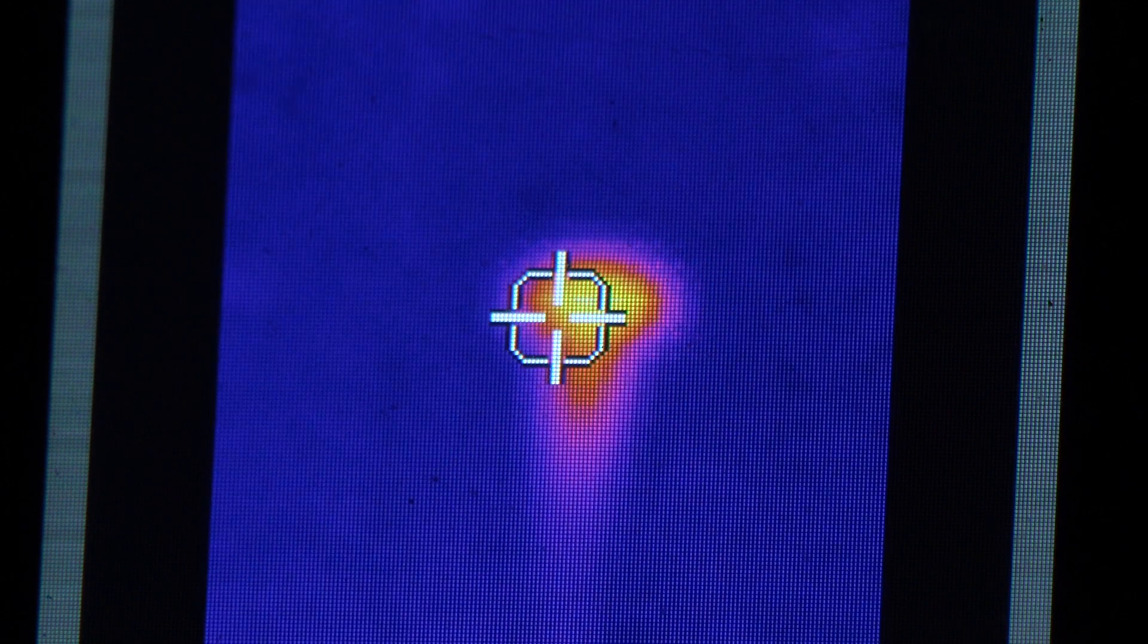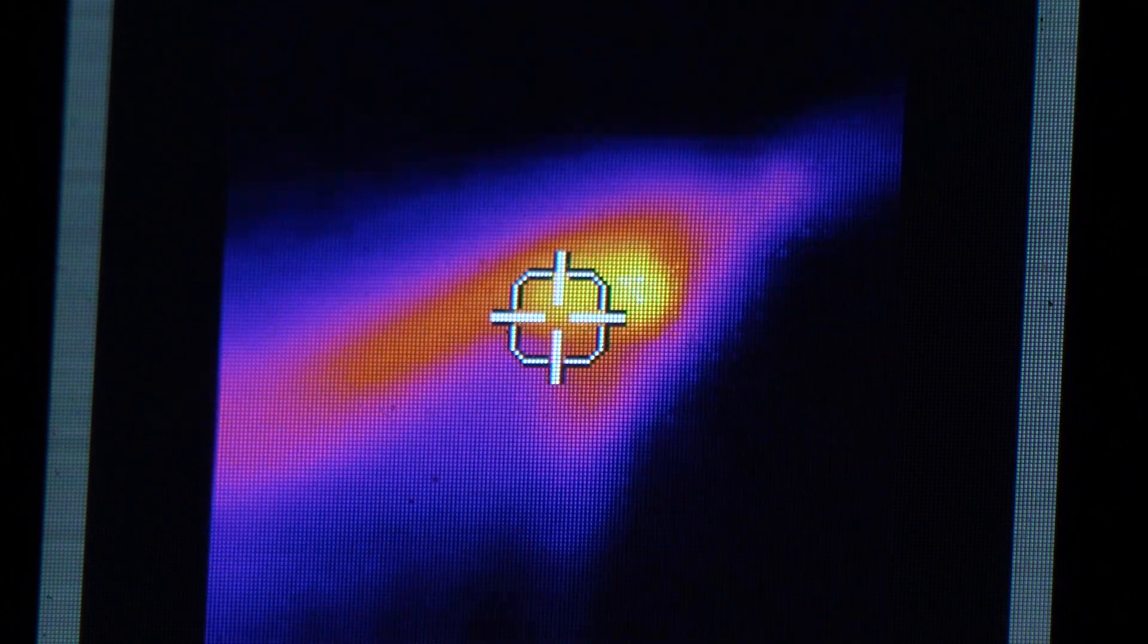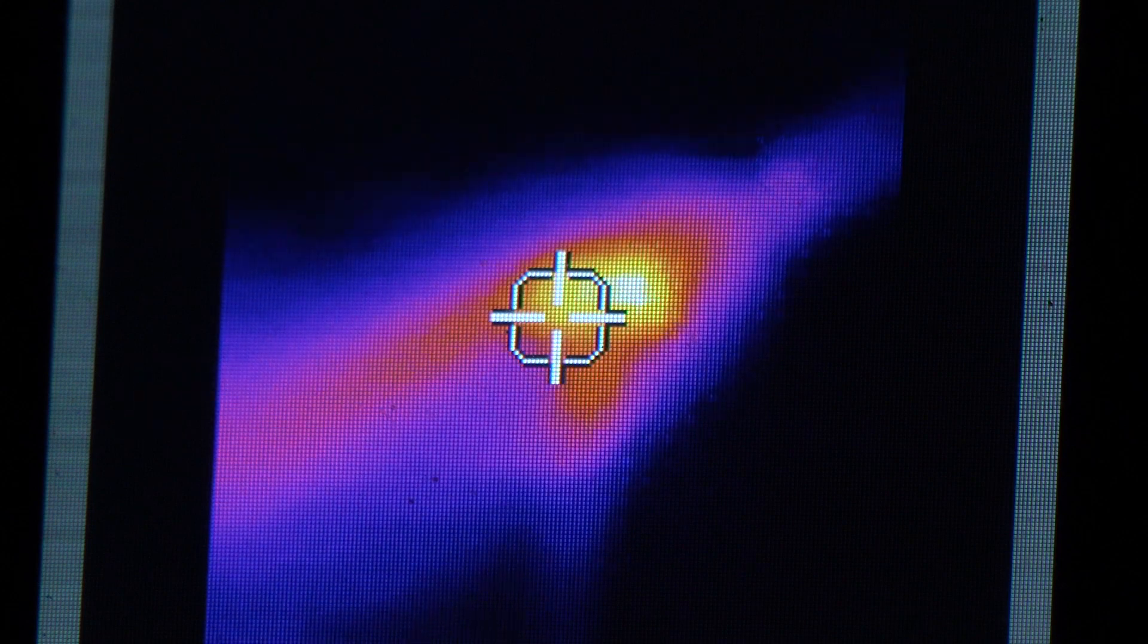So as we apply the blow torch to the bolt we can see that the bolt is gaining more and more energy and that's clearly visible in the thermal imaging camera. But we haven't yet added enough energy to the bolt for it to have moved out of the infrared and into the visible light spectrum. So as we add more and more heat we should be able to see it begin to emit some visible light.